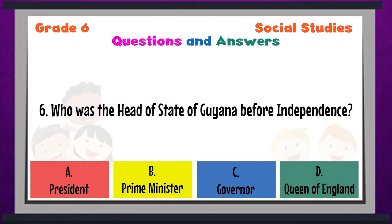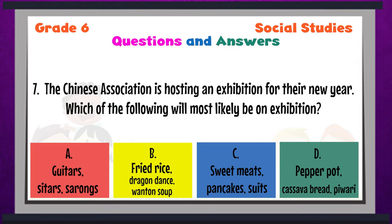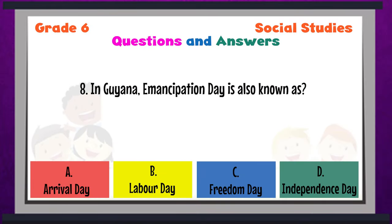Question 6: Who was the head of state of Guyana before independence? A, B, C, or D? Question 7: The Chinese Association is hosting an exhibition for their new year. Which of the following will most likely be on exhibition? A, B, C, or D? Write the letter that you think has the correct answer for question 7. Question 8: In Guyana, Emancipation Day is also known as A, B, C, or D.